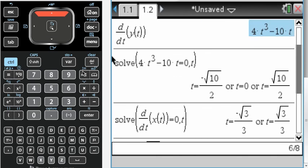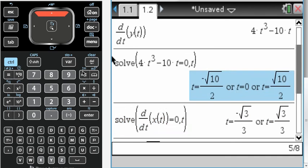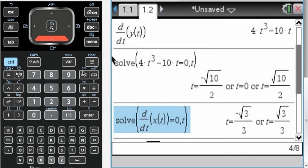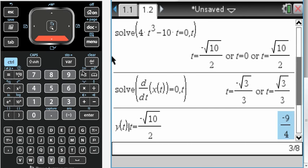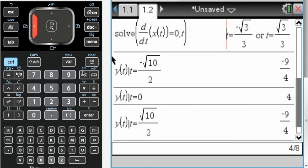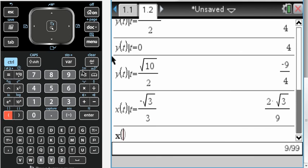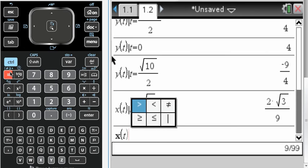And then for the vertical tangent lines, I actually already solved where dx/dt was zero. And a vertical line, obviously, is going to be vertical. So now what I'll do is just evaluate those at x. So x of t such that. There. And then x of t such that. Such that, by the way, is ctrl equals, and then we go left one right there.